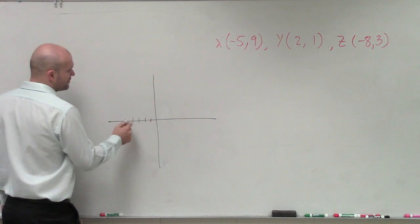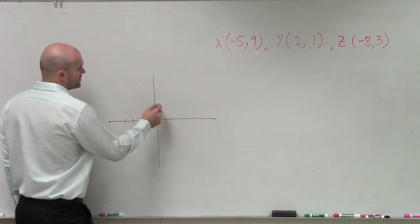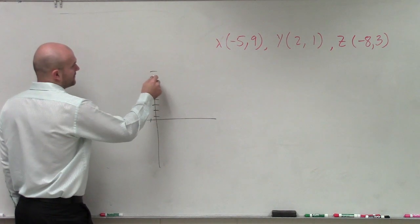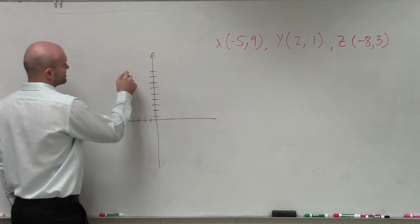Negative 5 is 1, 2, 3, 4, 5, and then up 9: 1, 2, 3, 4, 5, 6, 7, 8, 9. So that is going to be X.